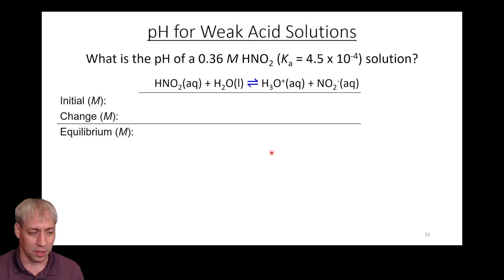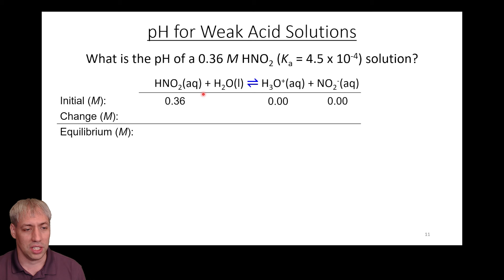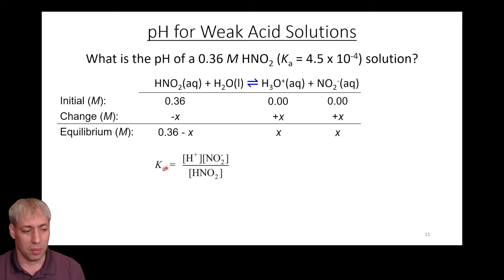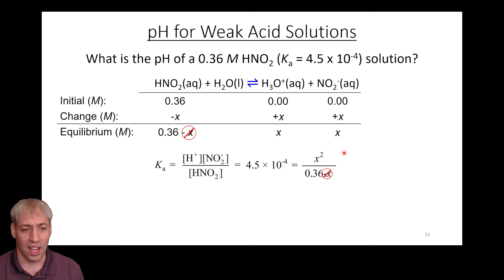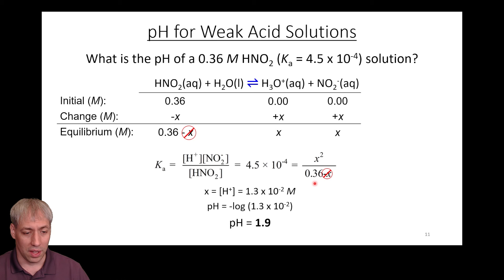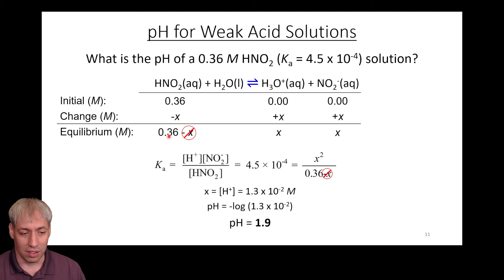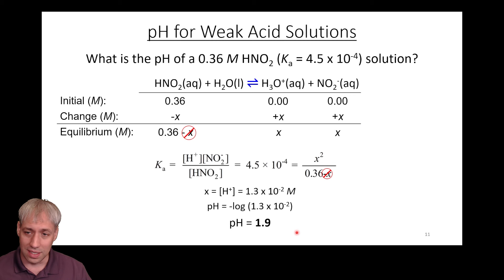We do the same ICE table math from chapter 13. We start with 0.36 M HNO2 and zero for the products. The change is -x for HNO2 and +x for both H3O+ and NO2-. We write Ka = [H3O+][NO2-] / [HNO2], plug in, and solve the algebra. If Ka is small and concentration is large, x is negligible — we can simplify. Solving for x gives us the concentration of H3O+ at equilibrium: 1.3 × 10⁻² M. Taking the negative log gives a pH of 1.9.